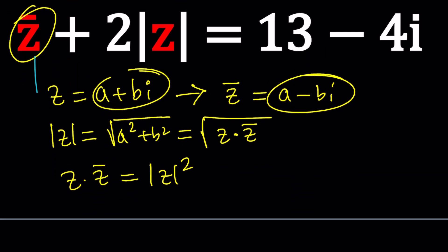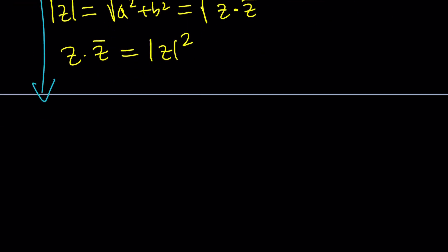Let's go ahead and plug in everything. Z bar is a minus bi plus two times the absolute value, which is the square root of a squared plus b squared. I'm gonna use this version, not the z times z bar. And this equals 13 minus 4i.